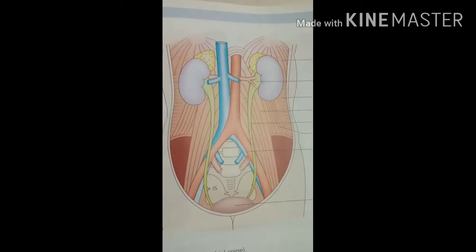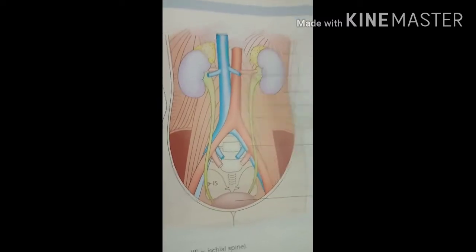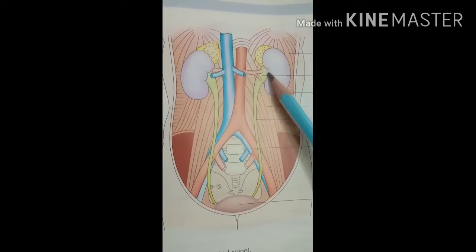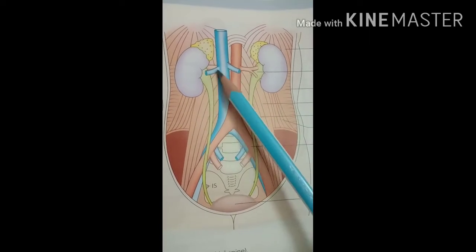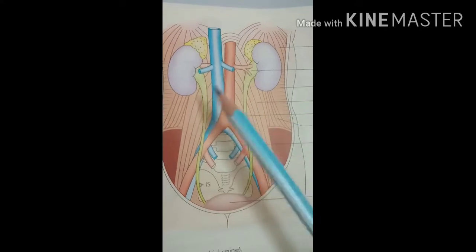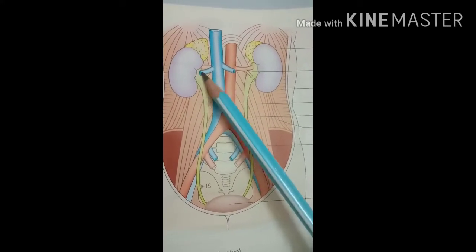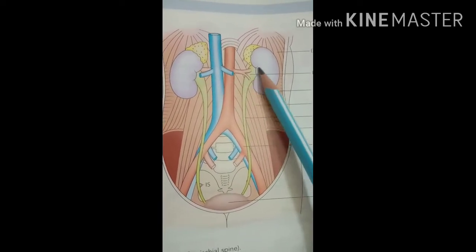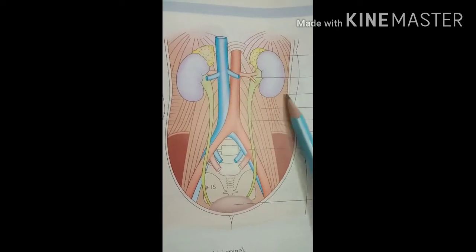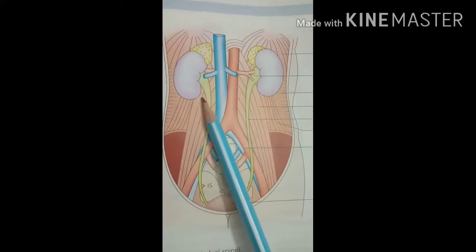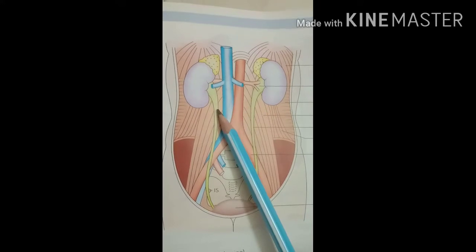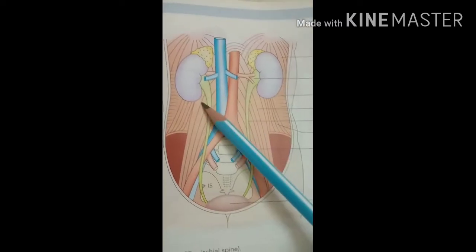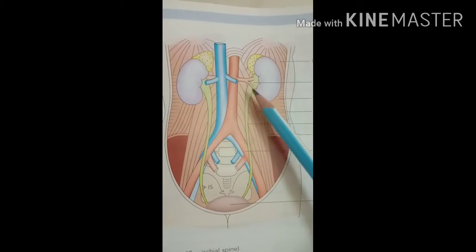Now we look at the course of the ureter. It starts from the renal sinus, which is the part of the kidney from which the renal artery, renal vein, and renal pelvis emerge. In the upper part of the ureter, there is a dilated part called the renal pelvis. It then goes downward, and at the level of the lower pole of the kidney, the narrow part begins — this narrow part is called the ureter proper, while the dilated upper part is the renal pelvis.